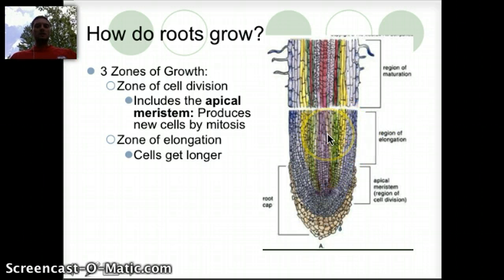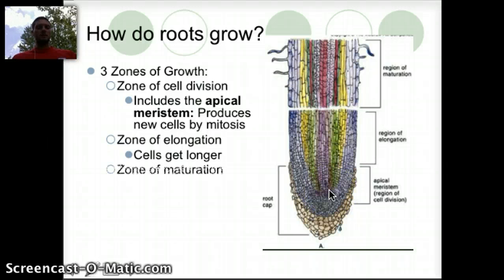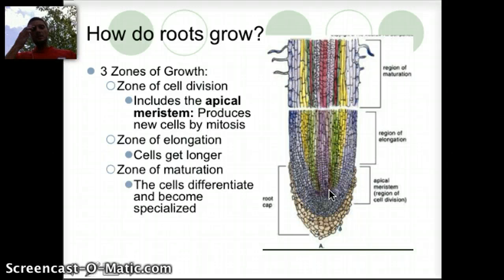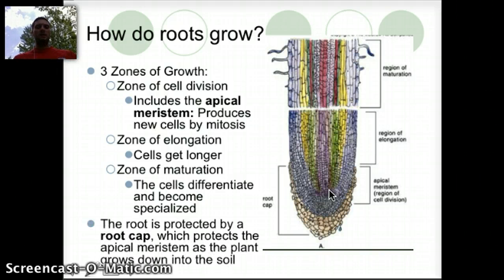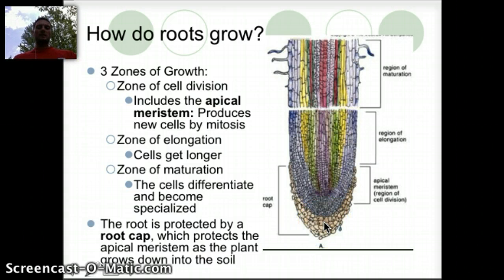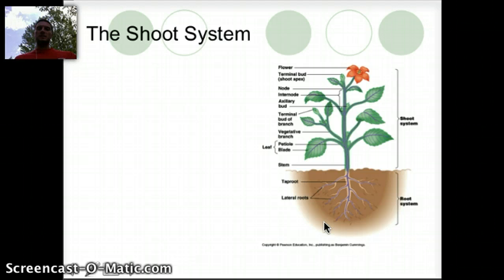The last zone is when the cells begin to differentiate and become specialized for their specific area and need. Overall, the root is protected by a root cap which helps to protect the apical meristem as the plant grows down into the soil.